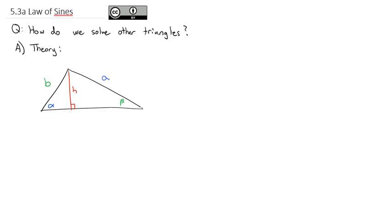If I were to take the sine of the alpha angle, that would be equal to the opposite — the height — over the hypotenuse, which is B.